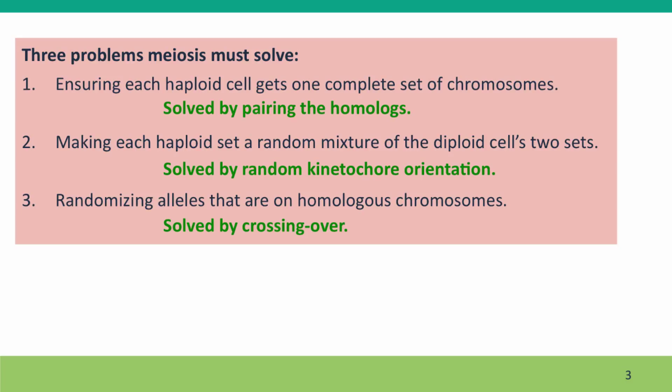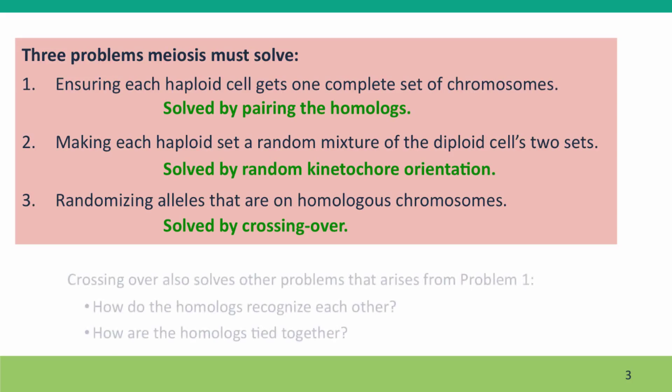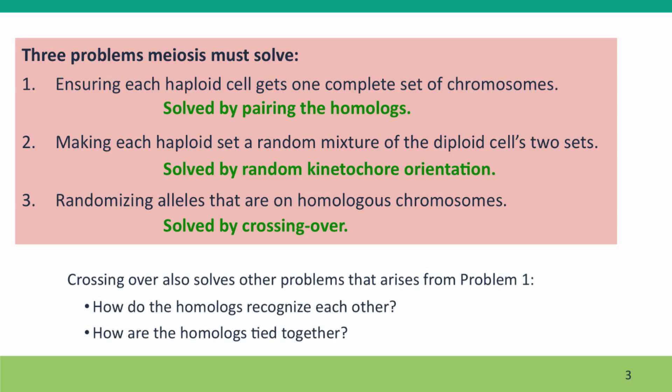The final problem — randomizing alleles that are on the same homologous chromosome — is solved by crossing over. Crossing over also solves a couple of other problems that we didn't really mention: how do the homologs recognize each other when they pair up, and how are they tied together so they don't come apart too soon.